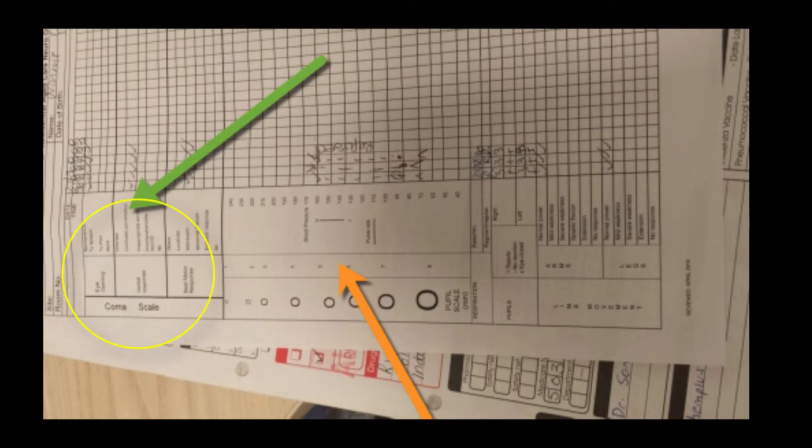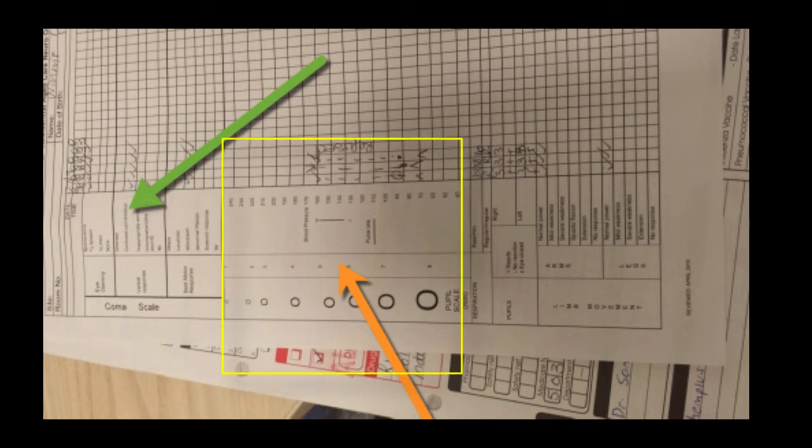The second one where the orange arrow is, that's about the pupil size. They have given pupil sizes for comparison, and you can see there are blood pressures there and they've actually charted the blood pressures.